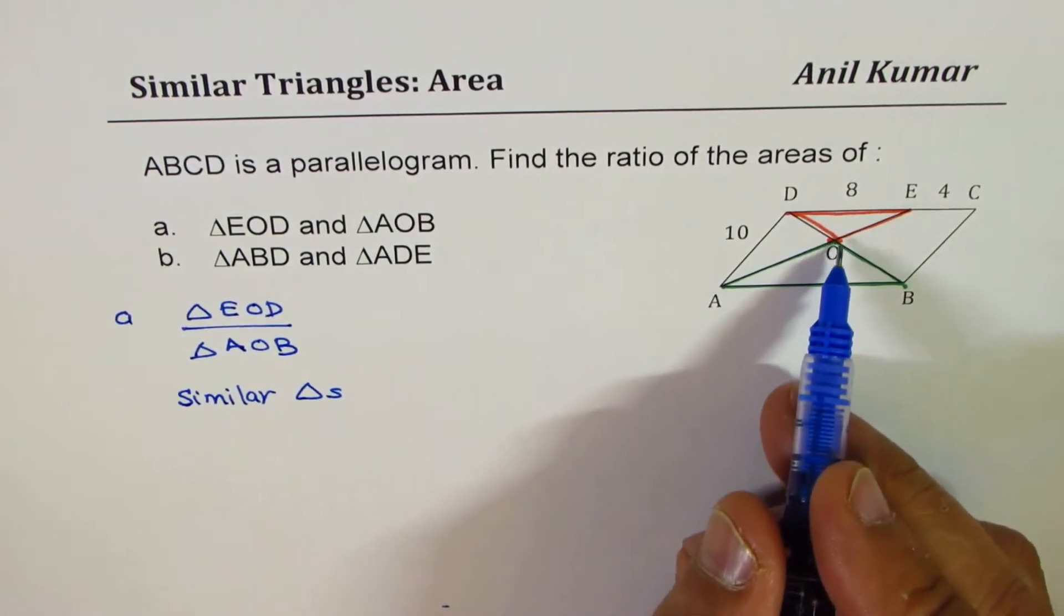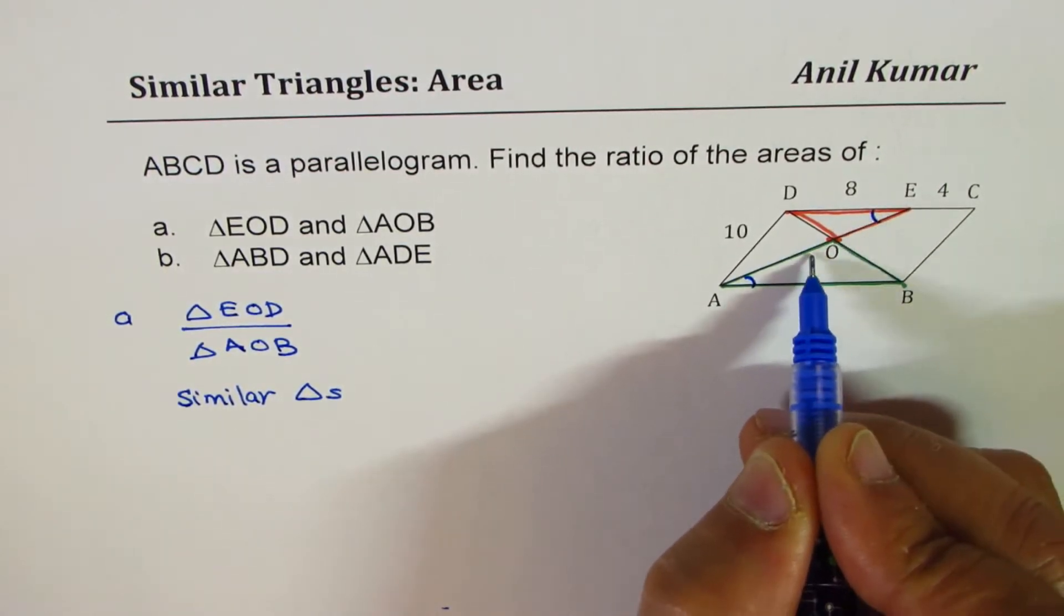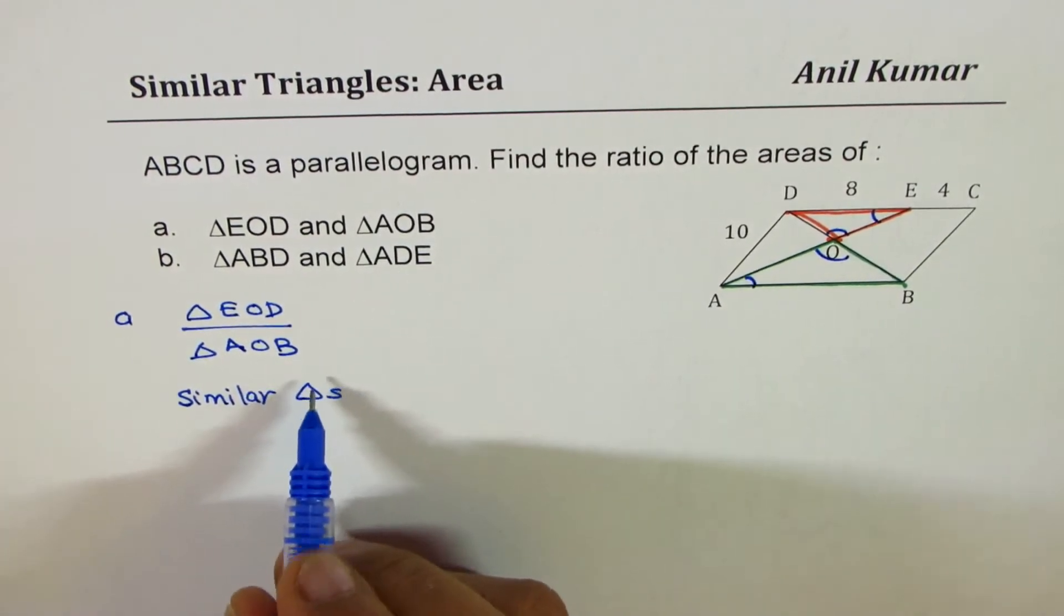Right, so angle angle angle. Since these are parallel sides, we know these two angles are equal and always opposite angles are equal. Right. So, therefore,